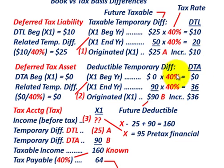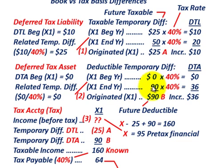At the beginning of the year we have zero times our tax rate of 40%, so zero deferred tax asset at the beginning of the year. At the end of the year, $90,000 times the 40% tax rate gives us a deferred tax asset of $36,000.